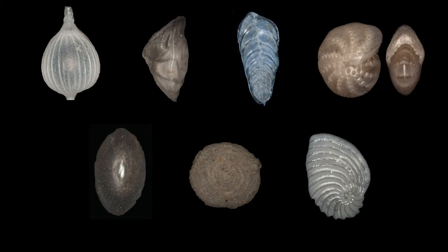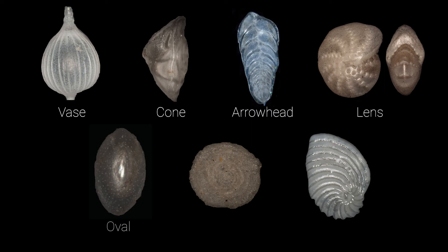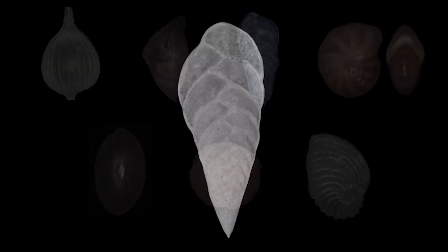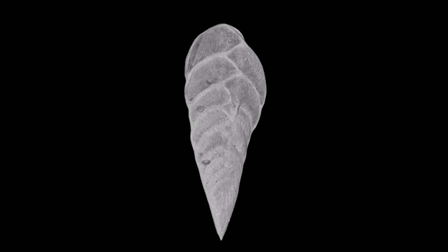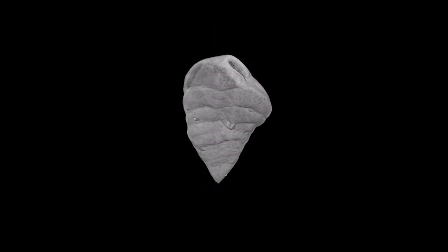The shapes of overall foraminifera are very diverse and is the second thing you should observe when trying to identify a species. Foraminifera may have a shape like a vase, a cone, an arrowhead, a lens, an oval, a disc, or a fan, among many other potential shapes. As you examine the overall shape, you may need to look at the foraminifera from a few angles to understand its shape in three dimensions.